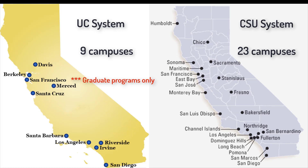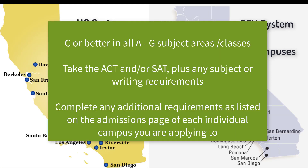These are the nine campuses of the University of California system, or UC system, and the 23 campuses of the California State University system, or CSU system. In order to be eligible for a UC or CSU school, you must have a C or better in all A through G subject areas and classes, take the ACT or the SAT plus any subject test or other writing requirements, as well as any additional requirements per an individual campus. It is possible that a UC or CSU school will have many more requirements than just meeting the A through G requirements.